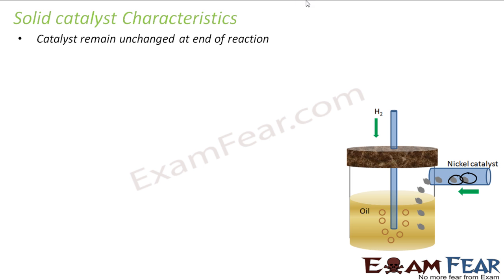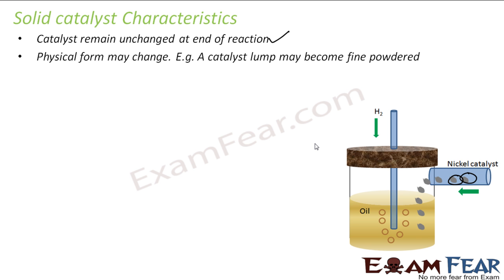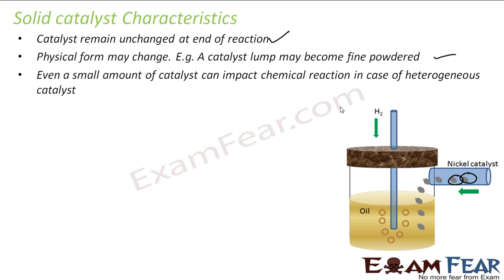The first characteristic is that the catalyst remains unchanged at the end of the reaction. We have used catalyst — the catalyst remains unchanged at the end of the reaction. The physical form may change; if you are using a lump catalyst, it may become powdered. But the quantity of the catalyst will be the same at the end of the reaction. Even a small amount of catalyst can create a huge reaction in case of heterogeneous catalyst. But in case of homogeneous, you have to increase the quantity of catalyst to increase the rate of reaction. In case of heterogeneous catalyst, since adsorption is taking place, even a small amount of catalyst will make a huge change in the rate of reaction.